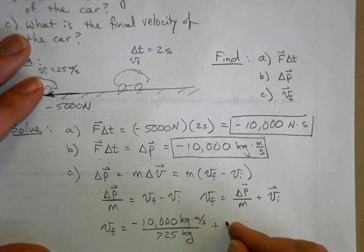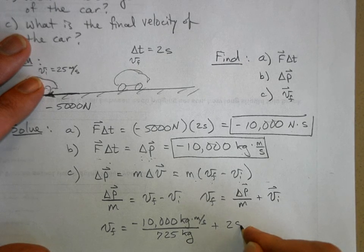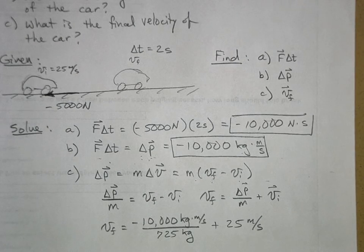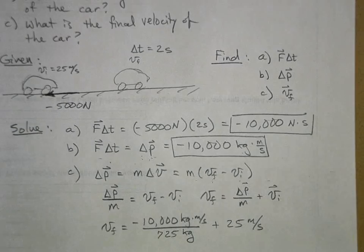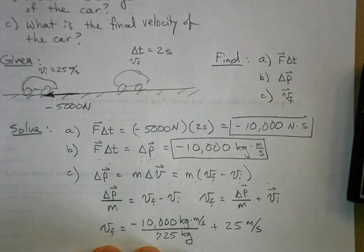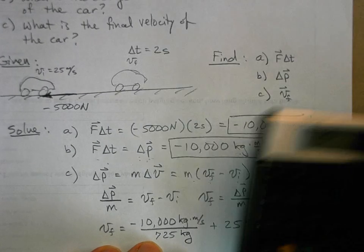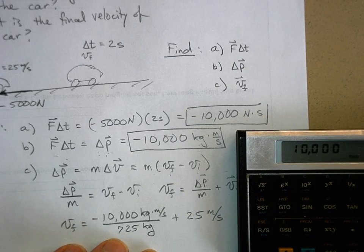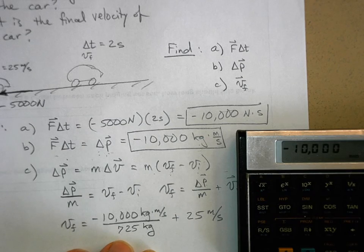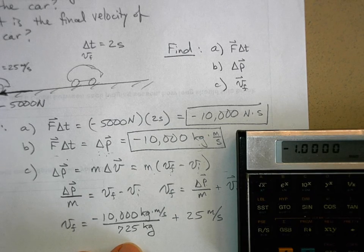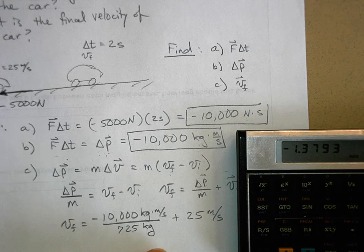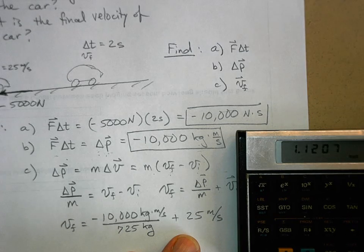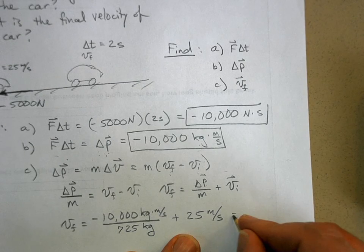the initial velocity which was 25 meters per second. And now I need my calculator. There it is. So 10,000, let's see 10,000 but it's negative, divided by 725, and then plus 25. And when you do that you get 11.2. Is that what you got?